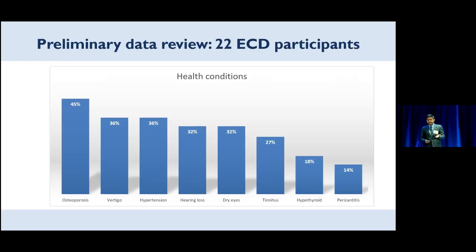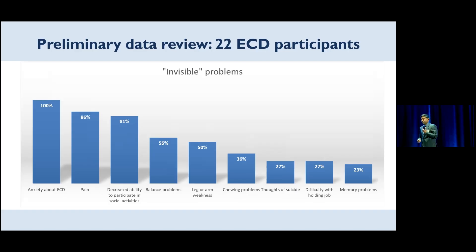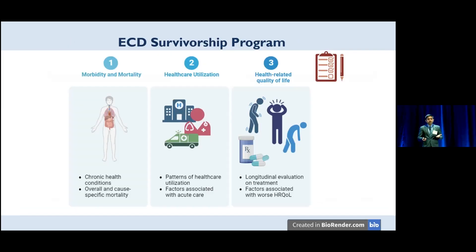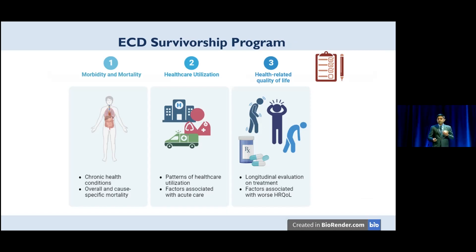The survey asks about your symptoms, health problems, and so forth. From the 22 participants who answered, we can already see a range of health conditions — from osteoporosis to hypothyroidism to heart problems — as well as invisible problems like difficulty with jobs, decreased ability to participate in social activities, pain, and anxiety. The overall hope is to have a survivorship program aimed at reducing this morbidity and late mortality, figuring out health care needs, and following these individuals with histiocytosis closely to see what factors can improve or worsen quality of life.